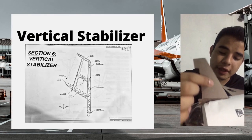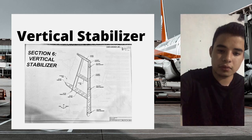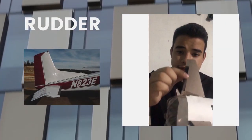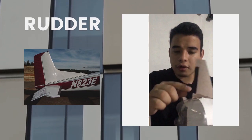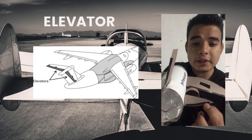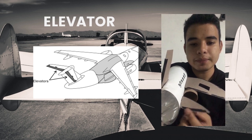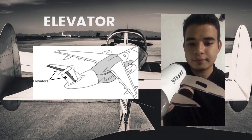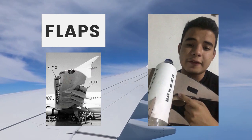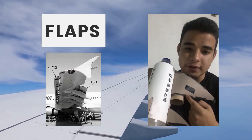This part is the vertical stabilizer — control yaw. This part is the rudder — control yaw. This part is the elevator — changes pitch. This part is the flaps — increase lift and drag.